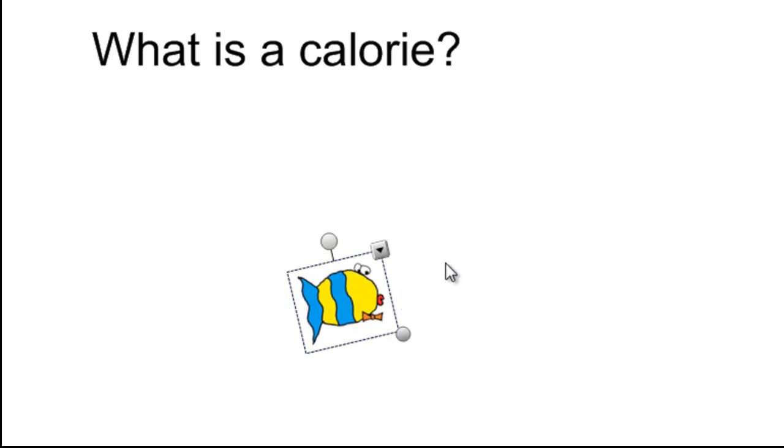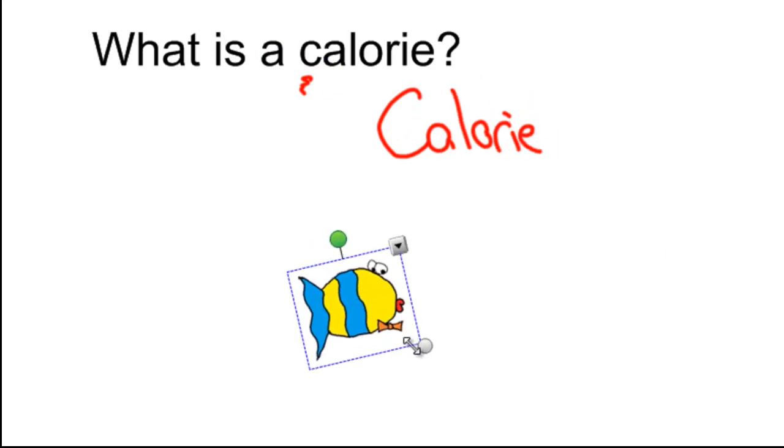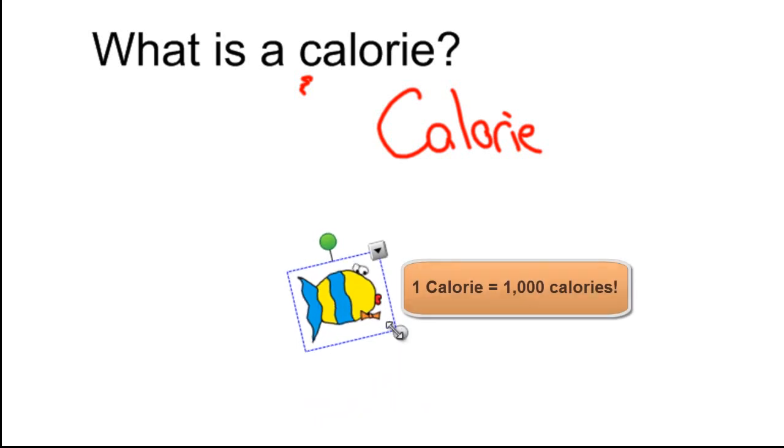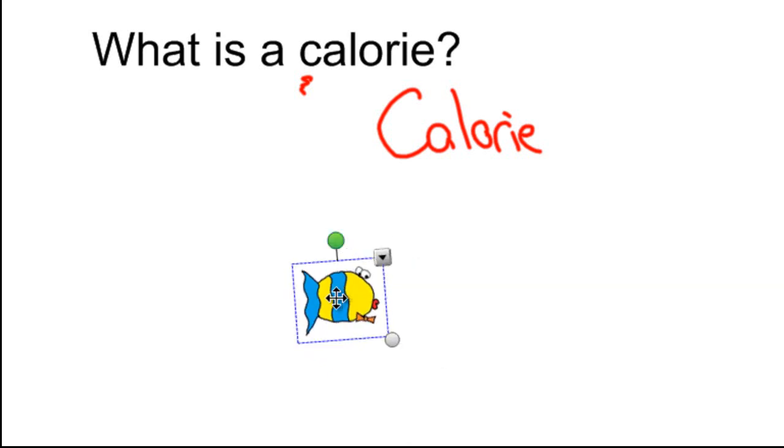One more question. Do you remember the difference between a little c calorie and a big C calorie? I sure do, Mr. Fish. A little c calorie is that formula we were just talking about. A big C calorie is also known as a kilocalorie or a kcal, and it's what they use to measure the number of calories in food. And a big C calorie is equal to one thousand little c calories. Great job, Fred.